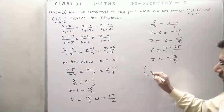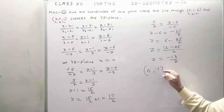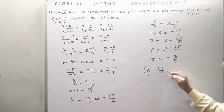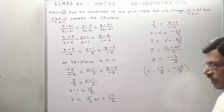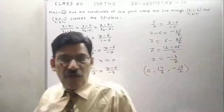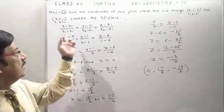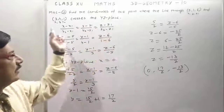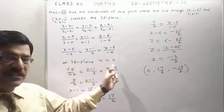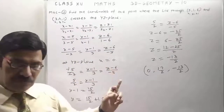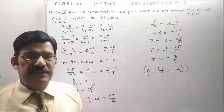So the point will be: x is 0, y is 17 by 2, and z is minus 13 by 2. This is the point of intersection of the line with the YZ plane, found using the two-point form of the line equation and the condition x equals 0 for the YZ plane. Thank you.